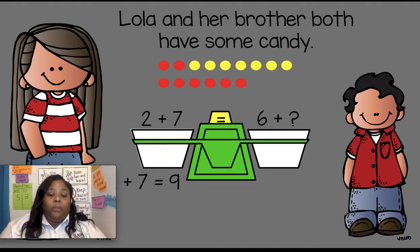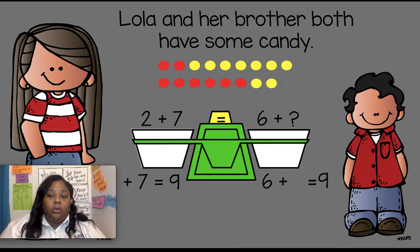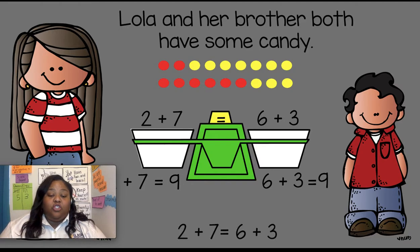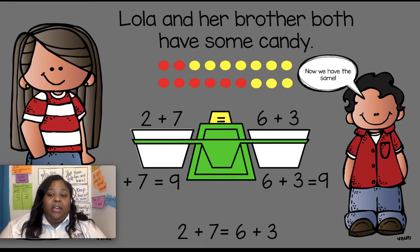Two plus seven equals nine. Six plus what number gives me nine? Counting up — one, two, three more. If I add three more to six, I get nine. So my answer is three. Six plus three is equal to nine, so now my equations are equal: two plus seven is equal to six plus three.